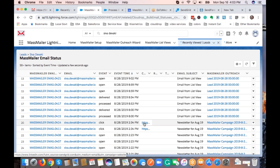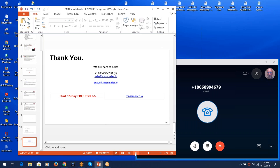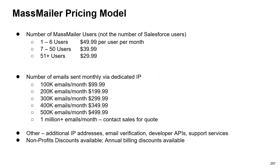That's it for the demo. Just quickly on pricing — as everybody knows, we do have nonprofit discounts. There are basically two components to pricing: the number of users and the number of emails actually sent. We also have additional services or add-ons such as additional IP addresses, email verification, and monitoring. That covers everything.